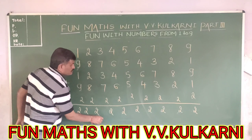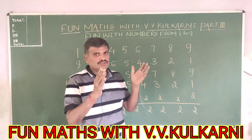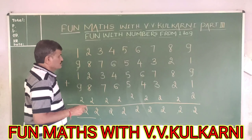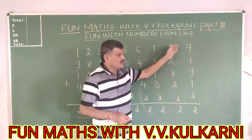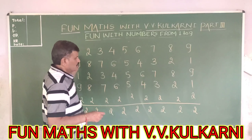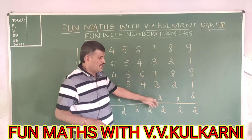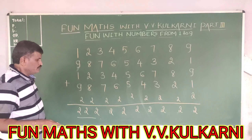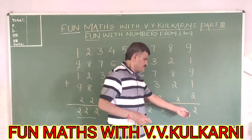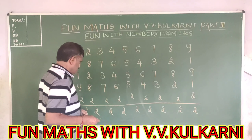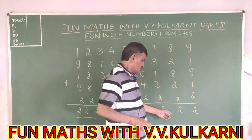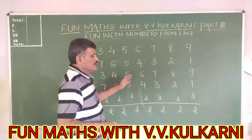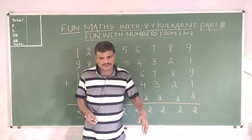I hope children you might have enjoyed this fun. What we did is: when we arrange the numbers from 1 to 9 in increasing order, again in decreasing order twice and add them, the sum is always going to be 2 repeating — 1, 2, 3, 4, 5, 6, 7, 8, 9, 10 times. So this is what you are going to get. I hope you might have enjoyed it.